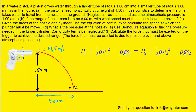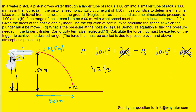Part E asks us to use Bernoulli's equation to find the pressure needed in the larger cylinder, and whether gravity terms can be neglected. The larger tube is directly connected to the smaller tube, so their heights above the surface are essentially the same — y1 is roughly equal to y2. Therefore, the gravity terms in Bernoulli's equation cancel out, and yes, gravity terms can be neglected.